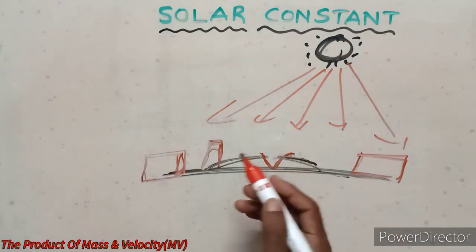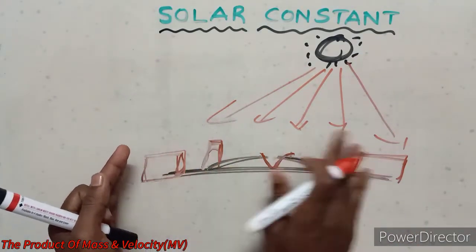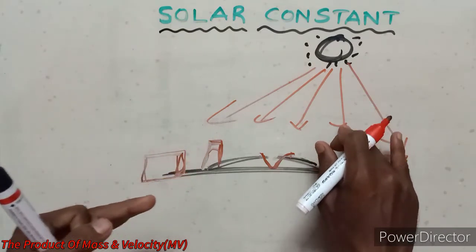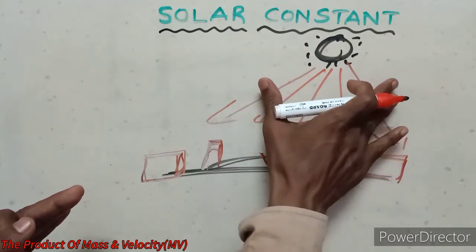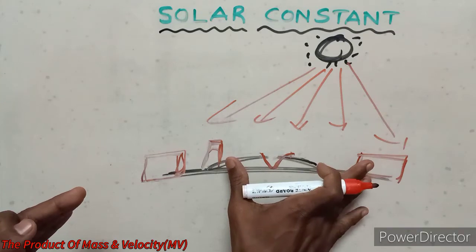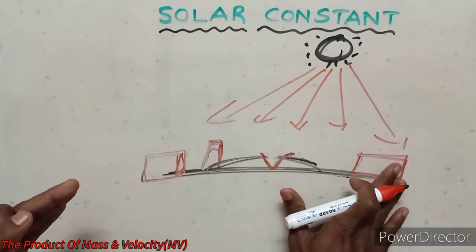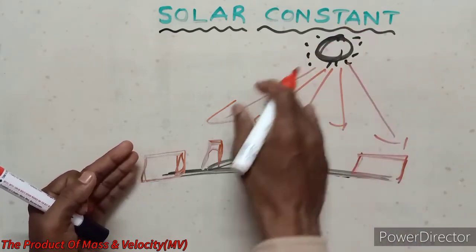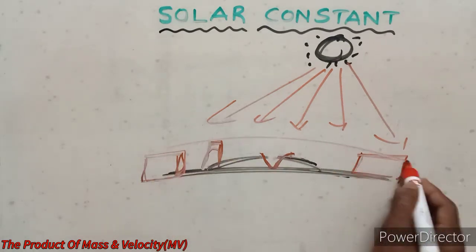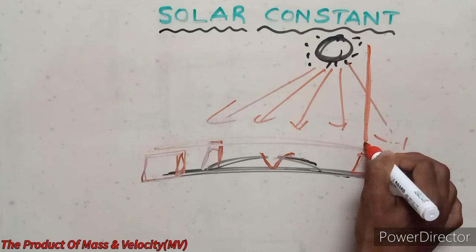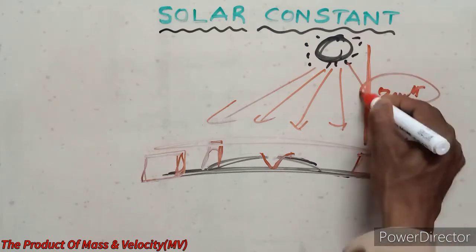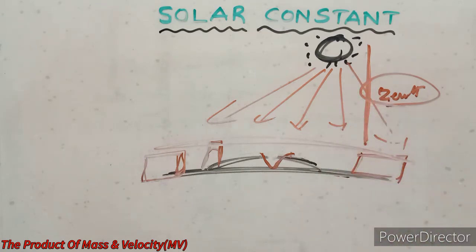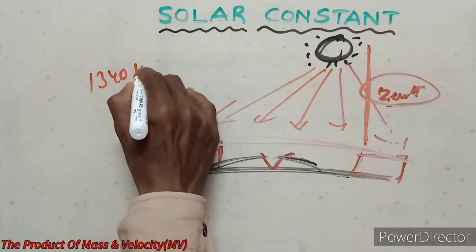The solar constant is defined as the rate of solar energy received by the surfaces of the Earth per unit area, placed normal to the sunrise, at the mean distance of the Earth from the Sun, in the absence of Earth's atmosphere. Its value is 1340 watts per meter square.